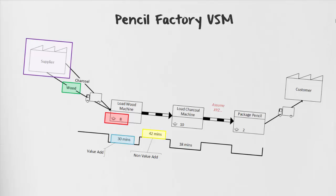Moving on to our red highlight underneath the process shape load wood machine, we can see that we have the number 8 next to a circle with what looks like a U under it. That shape indicates our operators. Our operators is the number of resources assigned to a given process. Looking at our processes, we can see that load wood machine is the first one, followed by load charcoal machine, which has 10 operators, and then package pencil, which is our last process shape with only two operators.